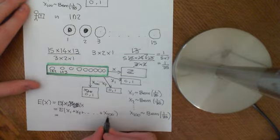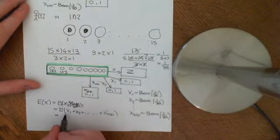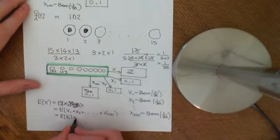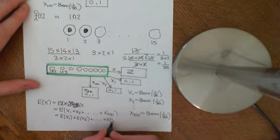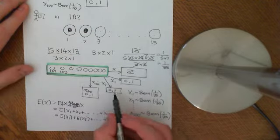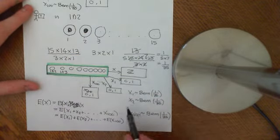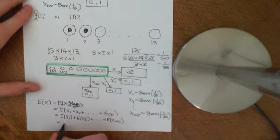Even though these aren't independent — they are very much not independent — linearity doesn't need them to be independent. So we can split this into the expected value of X1 plus the expected value of X2, all the way up to the expected value of X100. These are all identically distributed, so we're just going to end up with 100 times the expected value of X1.